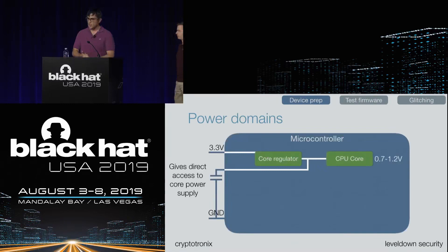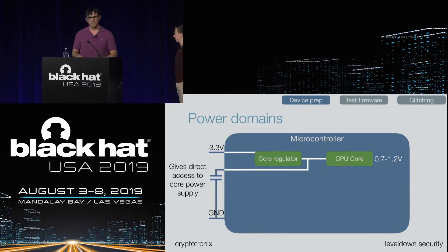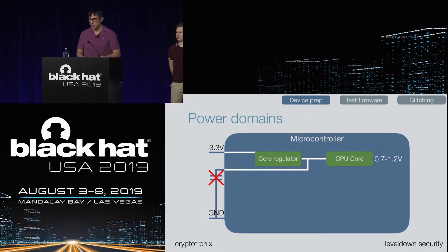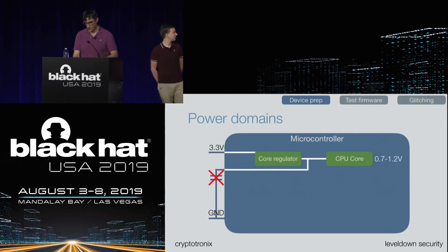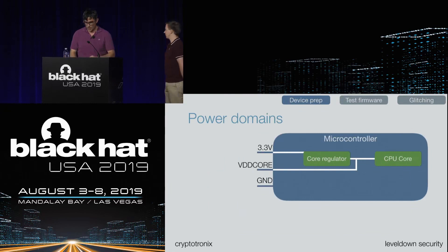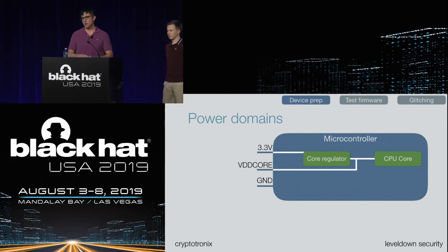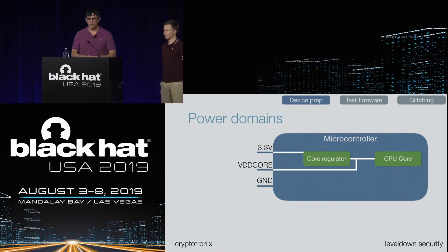The other interesting thing: that logic pin coming out external to the capacitor bypasses the core regulator. When we remove that capacitor, we can potentially access the voltage to the logic core directly. This is sometimes called VDD core on the data sheet. The key insight is that we have direct access to the internal CPU core — we don't have to provide 3.3 volts and fight that voltage regulator. Now we can supply voltage directly to the CPU core.